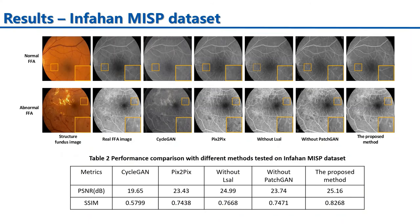This part shows a qualitative and quantitative comparison among state-of-the-art methods and the proposed method on the publicly available dataset. The comparison results indicate that the proposed method has better performance on FA image generation.